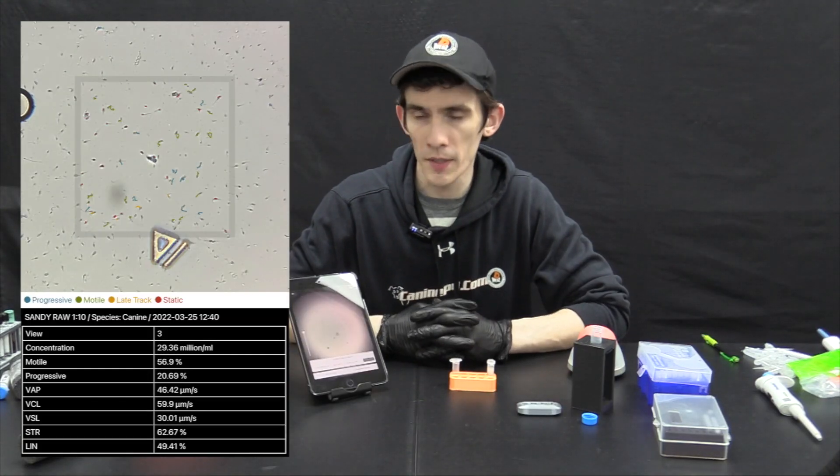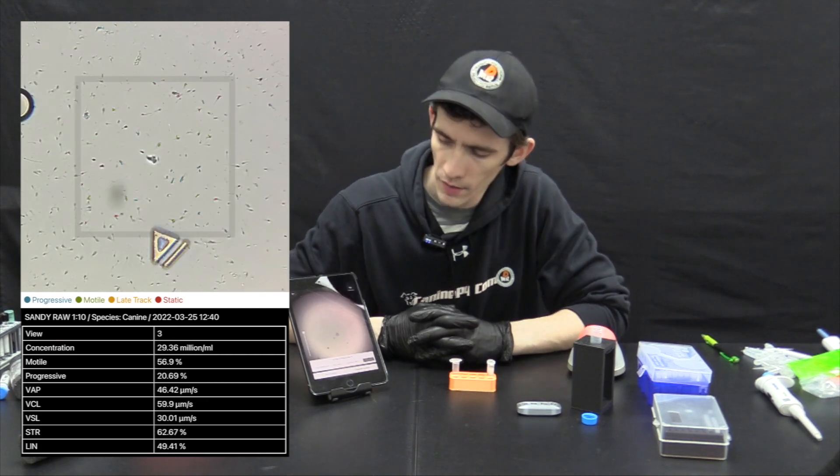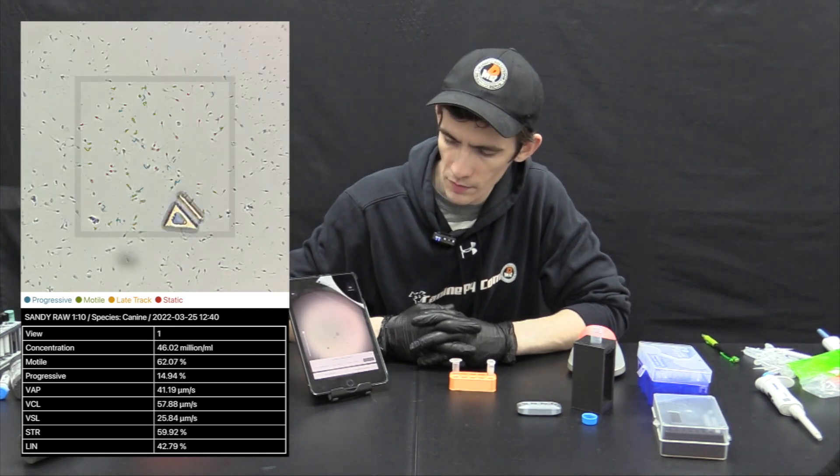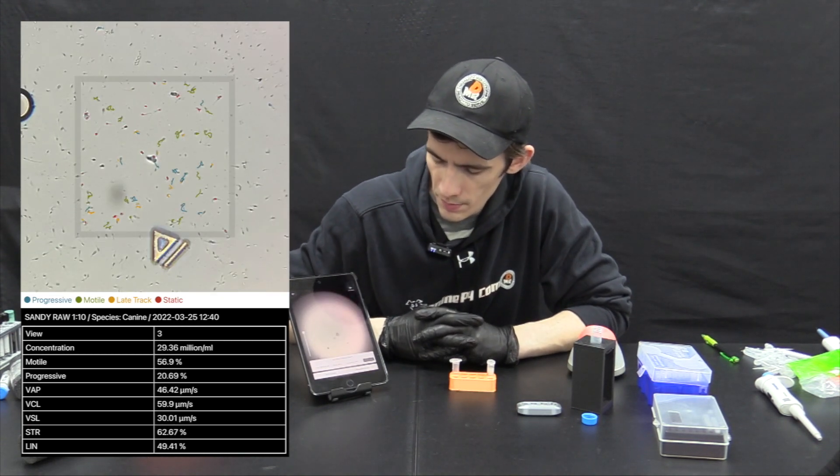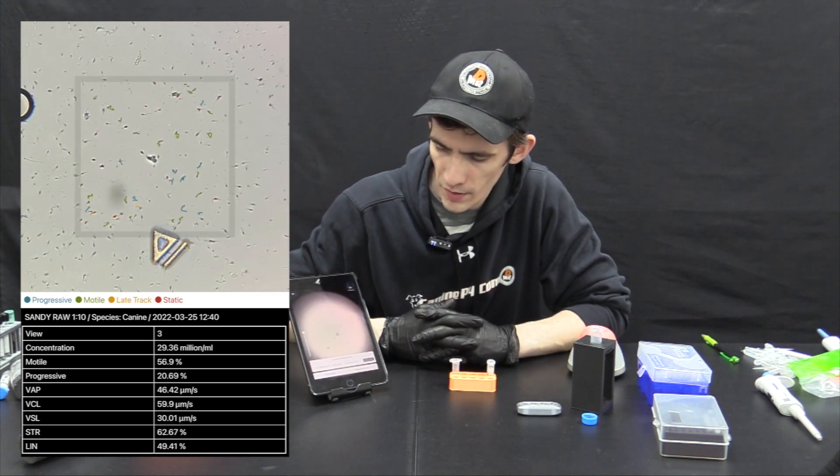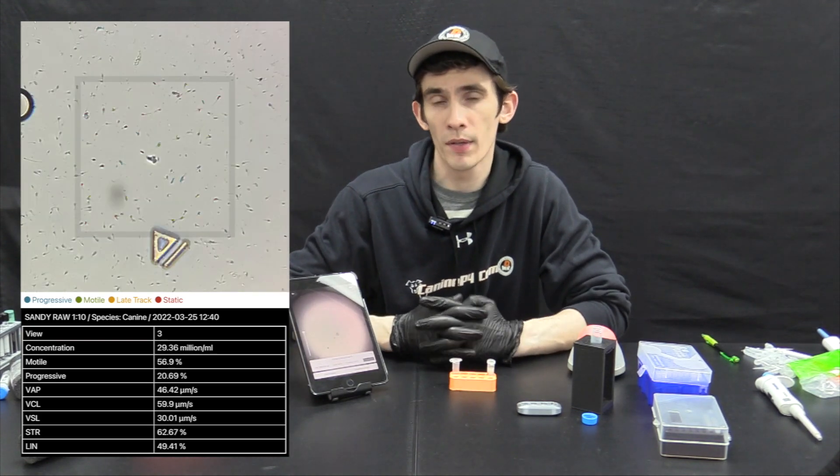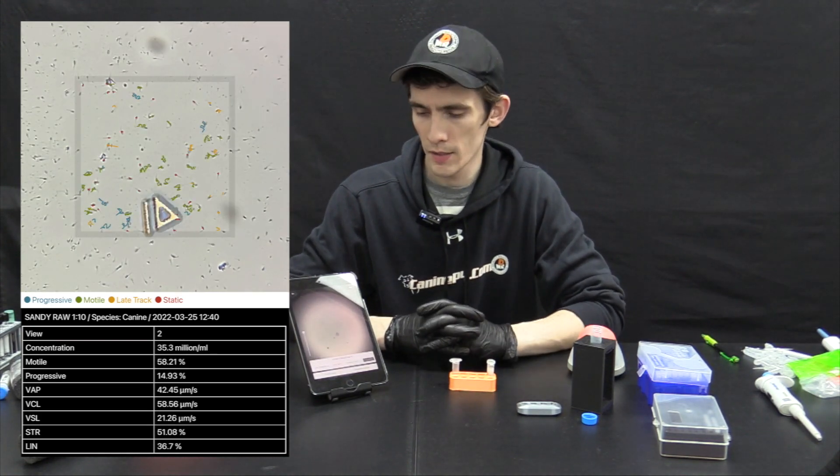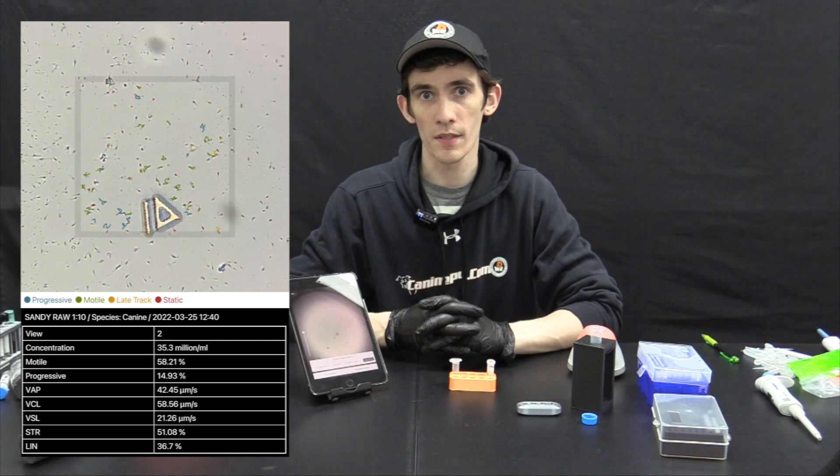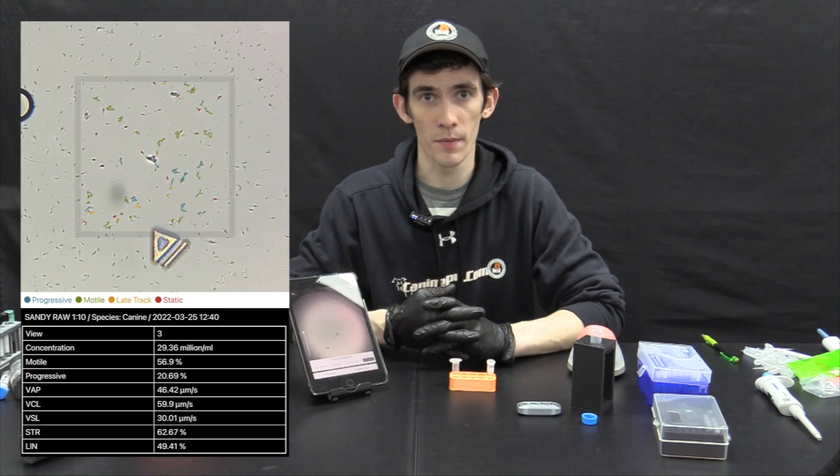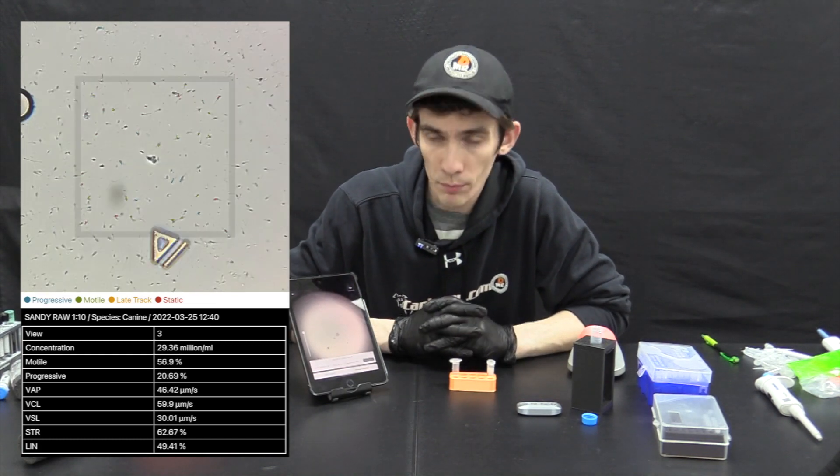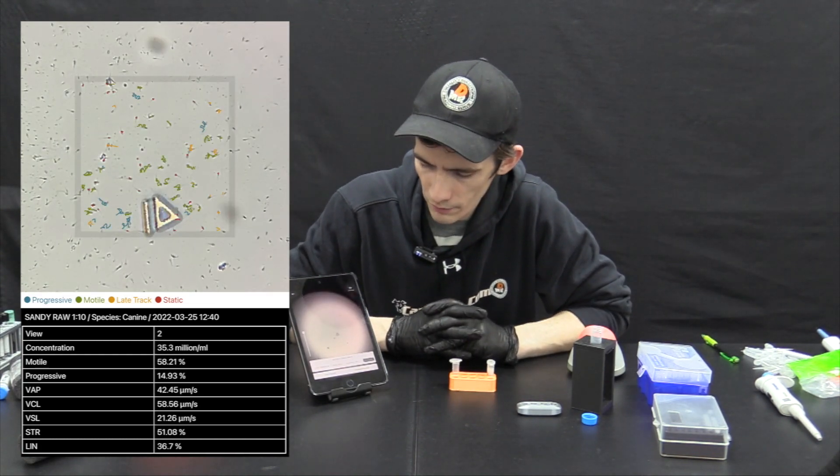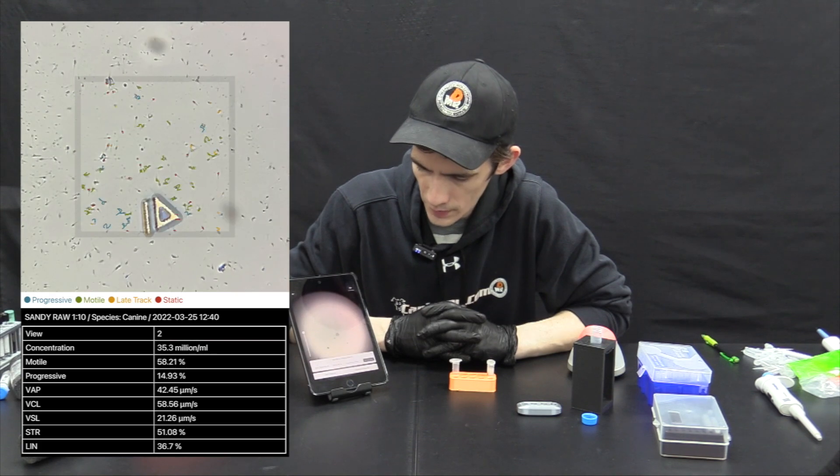So after performing our 1 to 10 dilution we re-ran the test and got a result, the first result of 46 million with a slightly decreased motility percentage of 62%. Again that number can vary depending on what it's mixed with, what temperature it's at when doing analysis, and the condition and age of the sperms themselves.